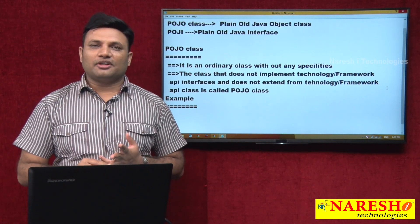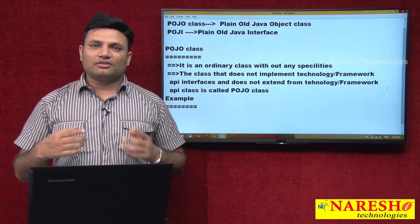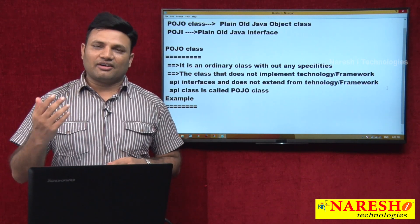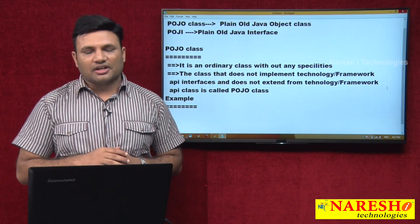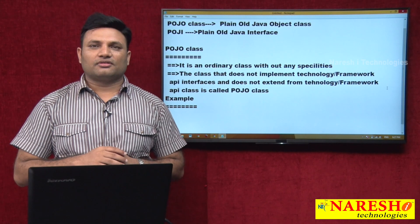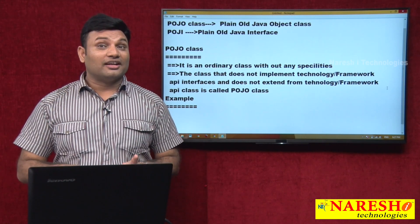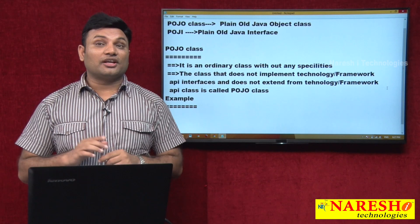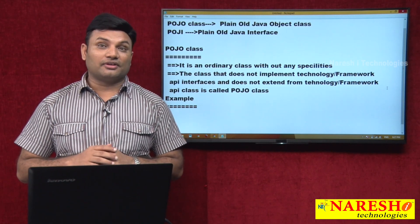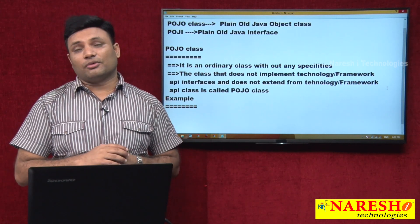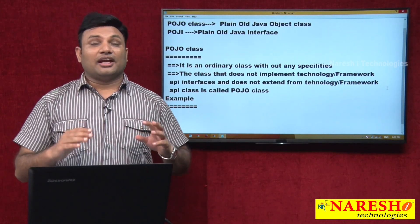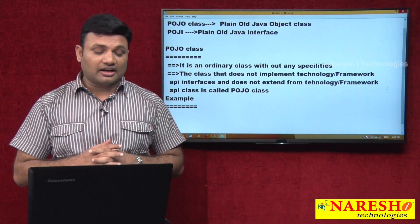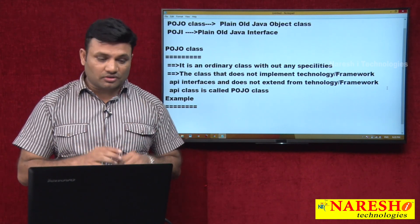POJO class supports inheritance. POJO class allows implementing interfaces. The only thing is that the super class of a POJO class should not be given by a technology API or framework API, and the interfaces implemented by the POJO class should not be given by any Java technology or Java framework. It is against extending from technology or framework API classes.